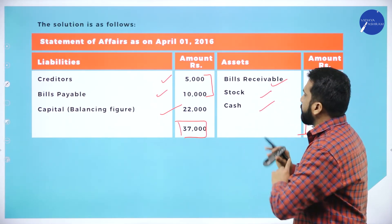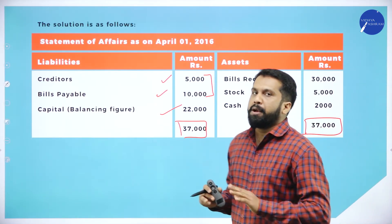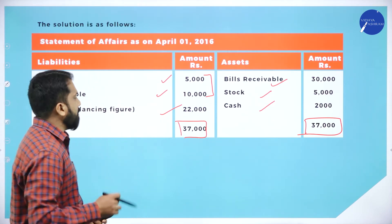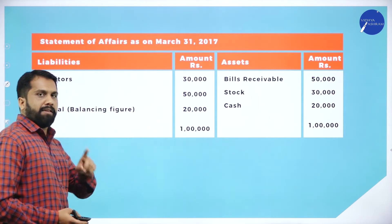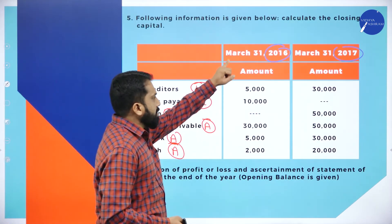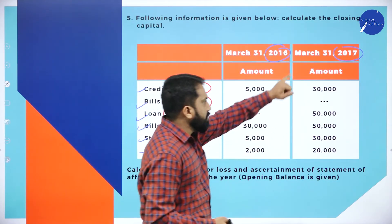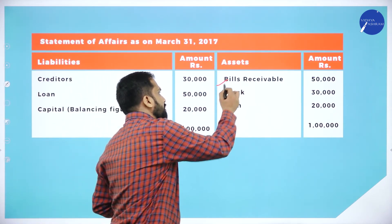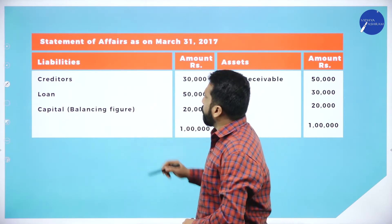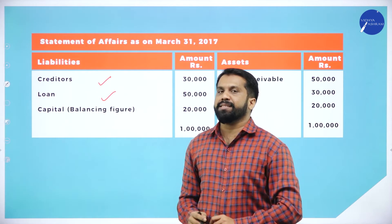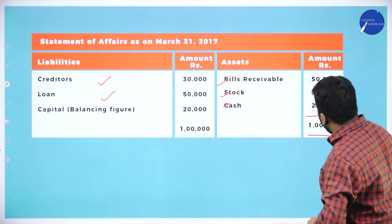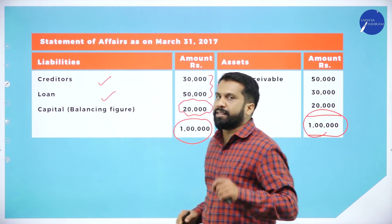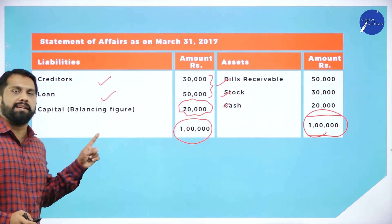We've done the statement of affairs for 2016, but we actually want the current year — 2017. Using the same procedure for 2017: note that in 2017 there are no bills payable. On the asset side: bills receivable, stock, and cash — total 1 lakh. On the liability side: creditors and loans. From 1 lakh minus the liabilities, you get 20,000. That 20,000 is the closing capital for 2017.